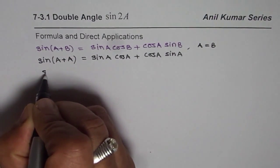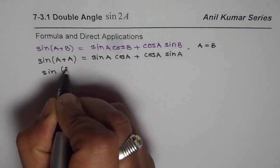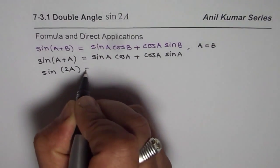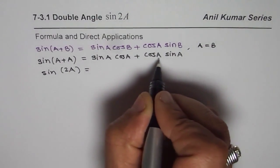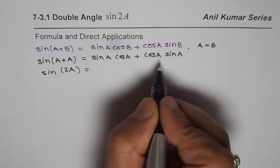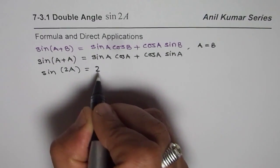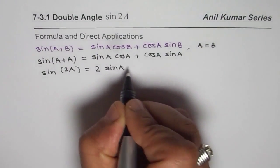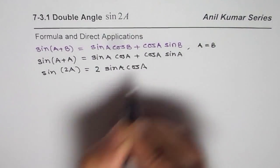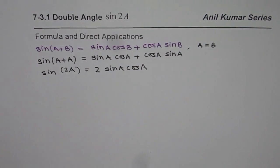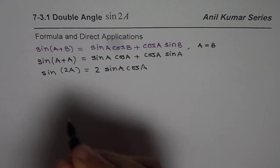Now sine A plus A is 2A. So I could write this as sine 2A equals to sine A cos A plus cos A sine A. Both are the same terms, so they can be combined and I can write this as 2 sin A cos A. So that is the double angle formula for sine.